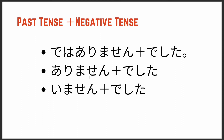Now we're going to combine past tense with negative forms. The past tense for desu is 'deshita,' and the negative form is 'dewa arimasen.' When you want to convey something in past tense and negative, you use 'dewa arimasen deshita.' For aru, the negative plus past tense will be 'arimasen deshita.' Similarly for iru, the negative 'imasen' plus past becomes 'imasen deshita.'